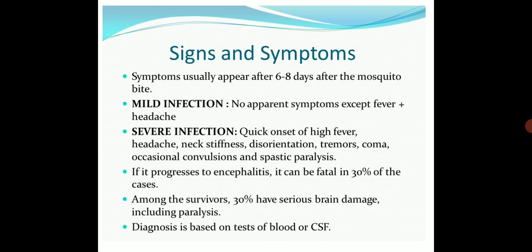In case of Japanese encephalitis, the fatality rate is up to 30 percent, and 30 percent of patients suffer serious brain damage including paralysis. The disease can be diagnosed by tests based on blood and also cerebrospinal fluid.